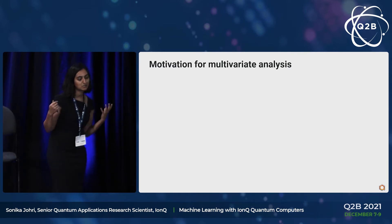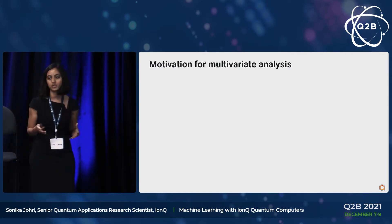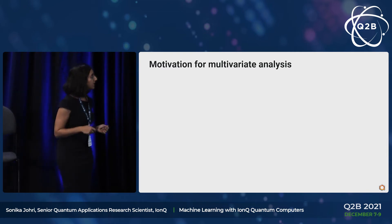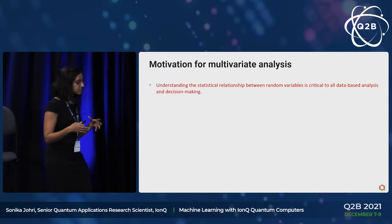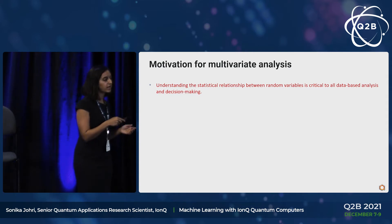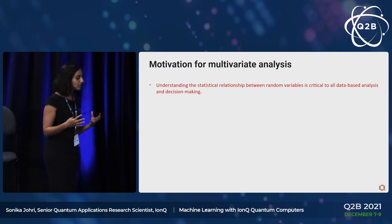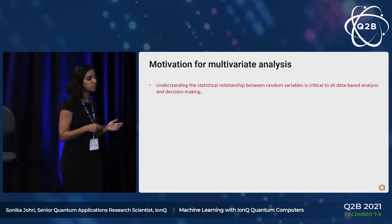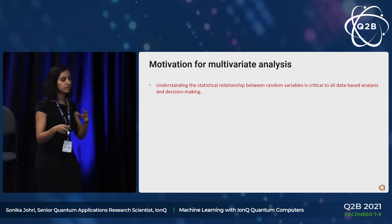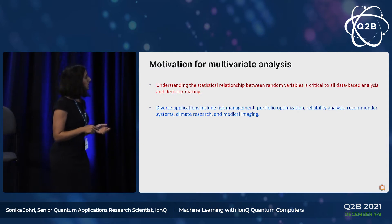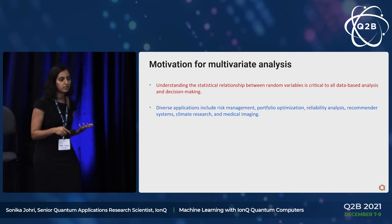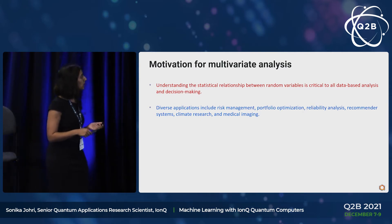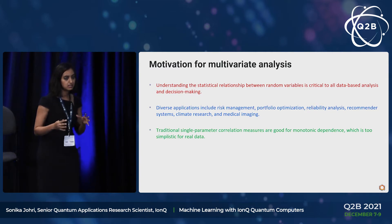Let me begin by motivating why we want to study joint probability distributions and multivariate analysis. Multivariate analysis is the science of understanding the statistical relationships between several random variables. It is really critical if you are doing database analysis or decision making — whether you're in risk management, finance, engineering reliability analysis, climate research, or the medical field. You want to understand how several variables relate to each other.